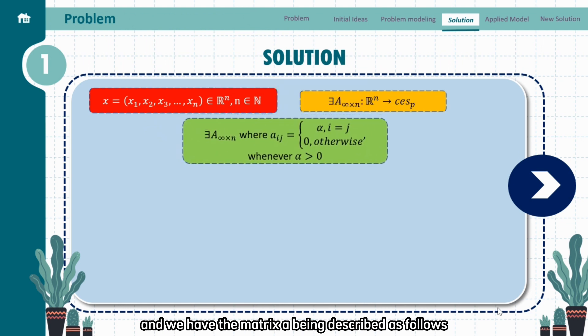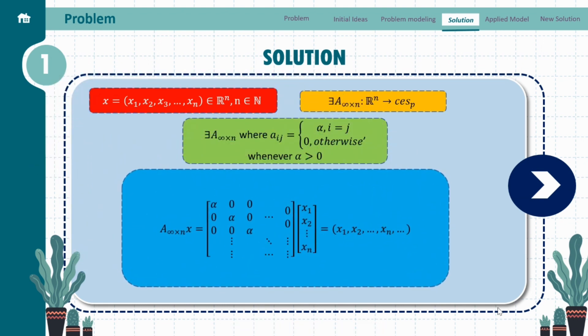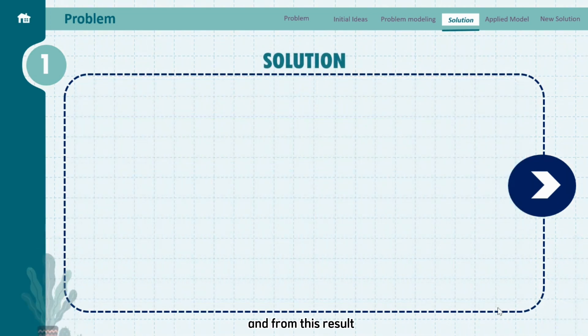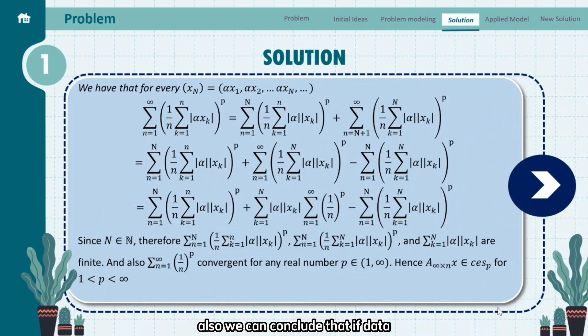And we have the matrix A being described as follows, and we have the following result. From this result, we can also conclude that if data can be transformed such that each data in the dataset can be an element of Cesaro sequence space.